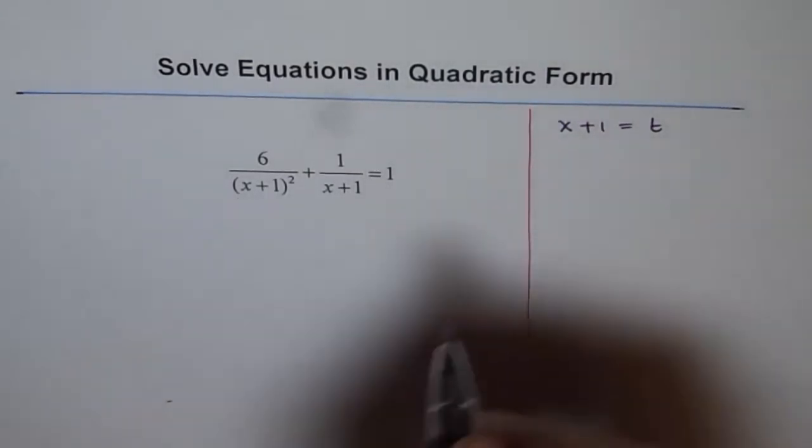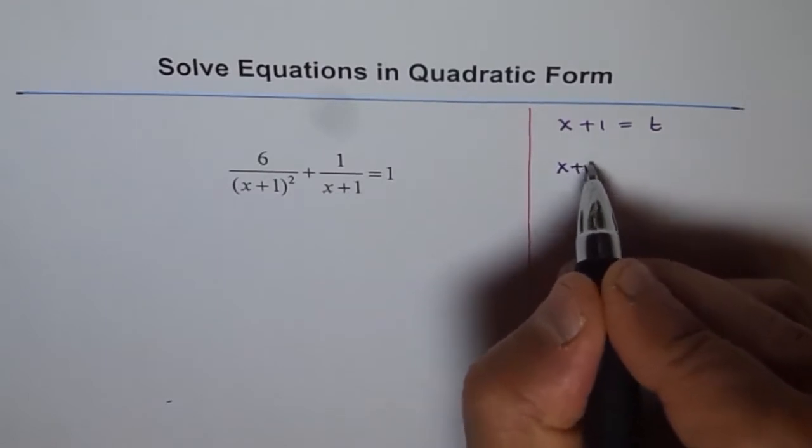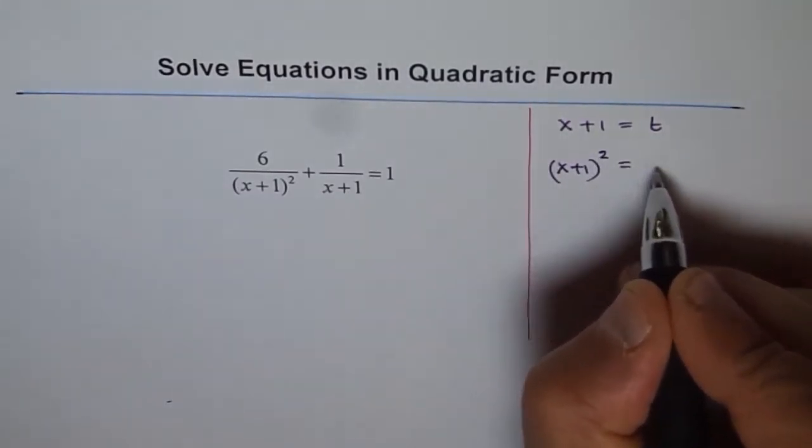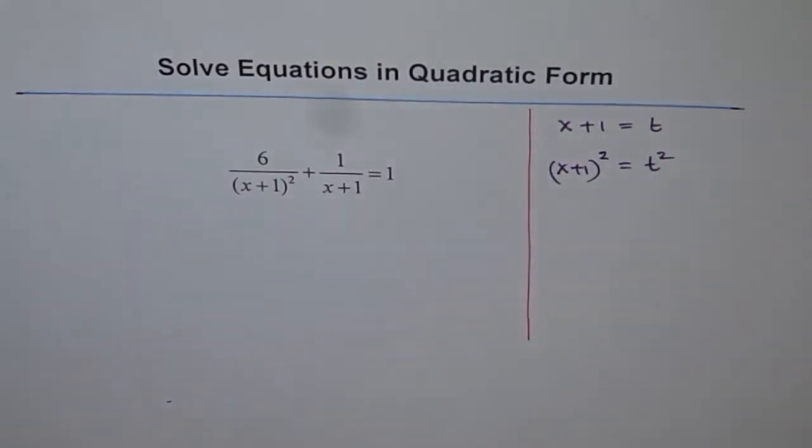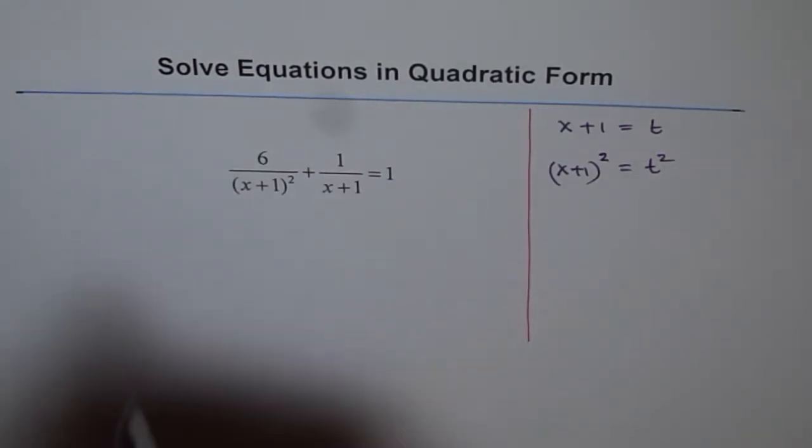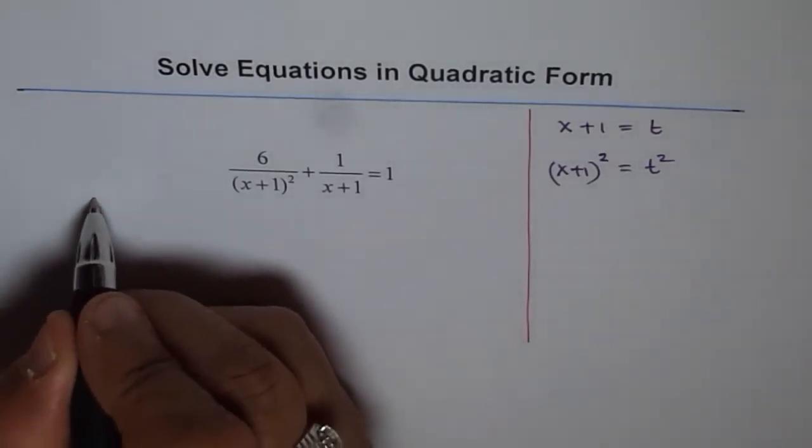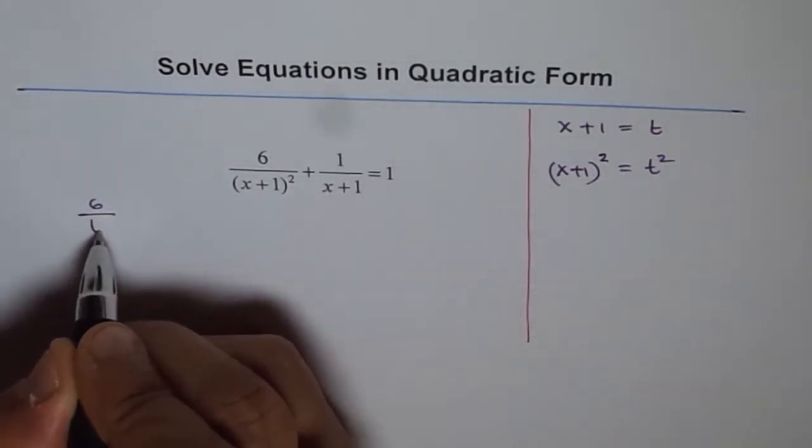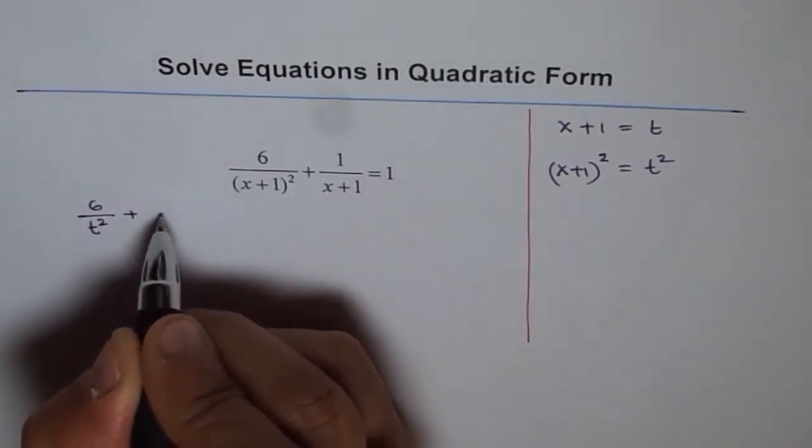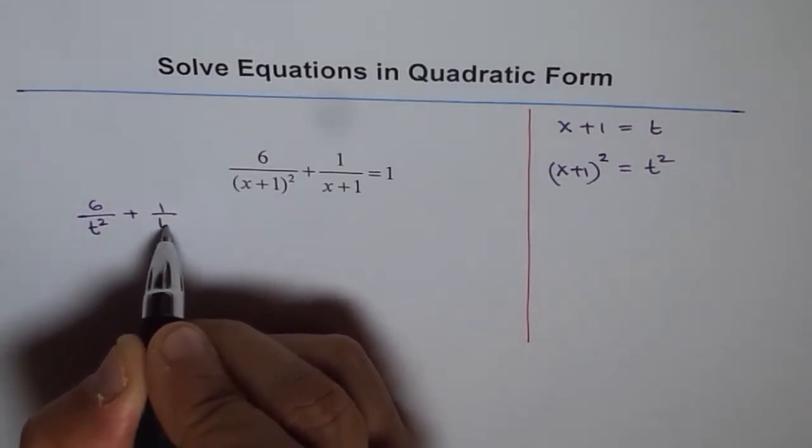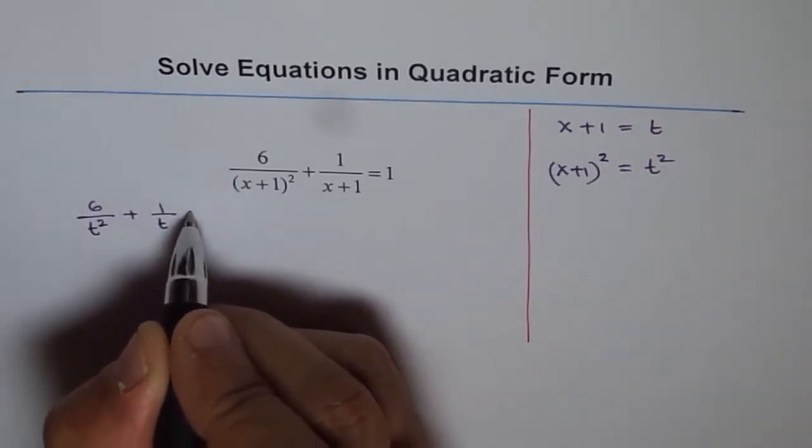In that case x plus 1 whole square is what? x plus 1 whole square will be t square. Let's do this substitution and see how the equation gets transformed. So this equation can be written as 6 over t square plus 1 over t equals 1.